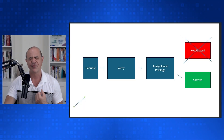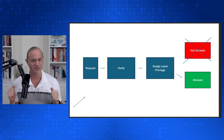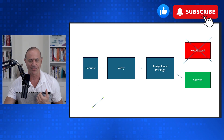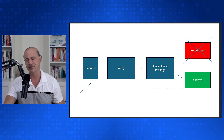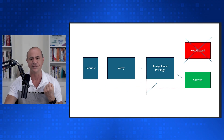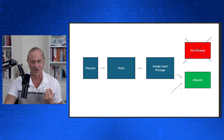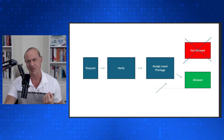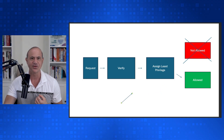Zero trust has certain patterns and components. The first component is verify everything. So instead of just letting things occur — Mike can talk to Sally — we're going to verify everything. If Mike wants to talk to Sally, he'll request the ability to do so. He'll be given some type of policy engine that checks if he's allowed. If allowed, he'll be assigned the least privilege — only what he needs to do his job and no more. If data or a system is deemed allowed, access is granted; if not, it's blocked.